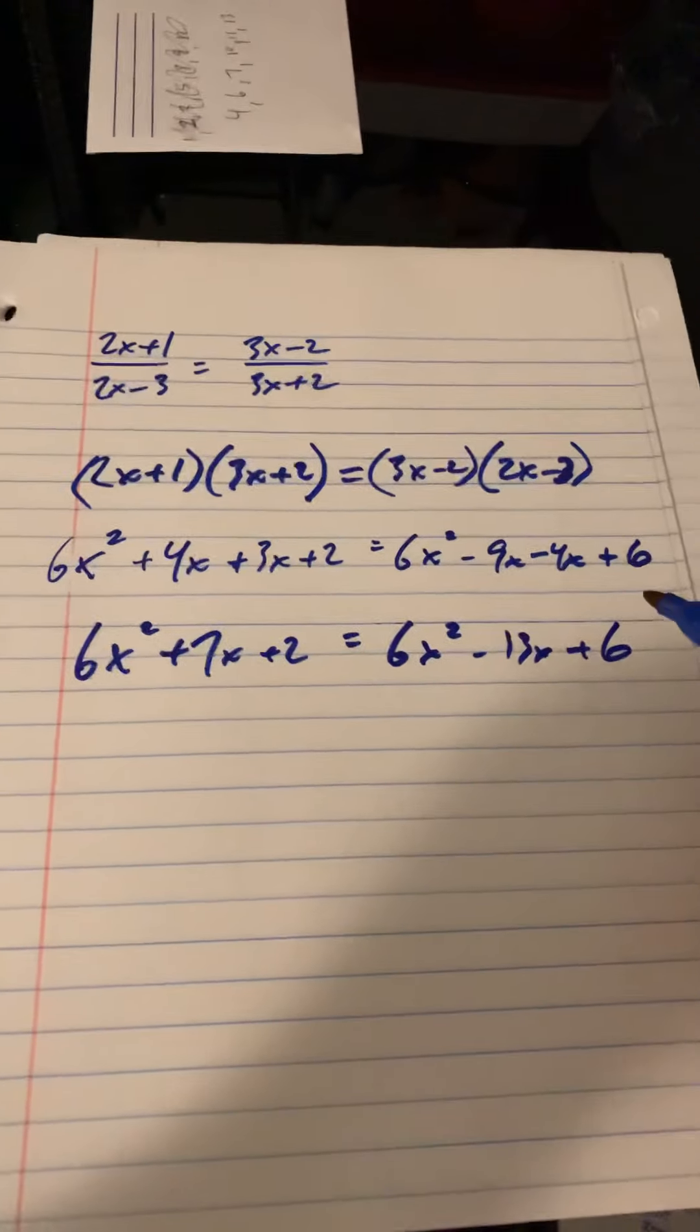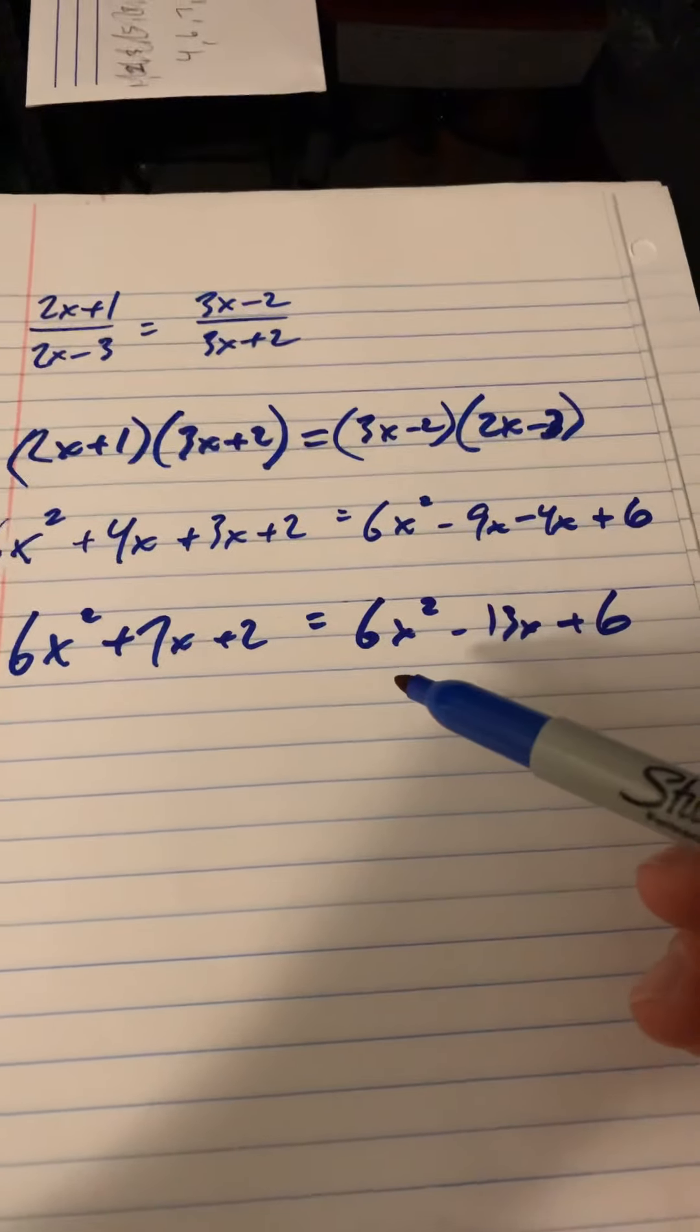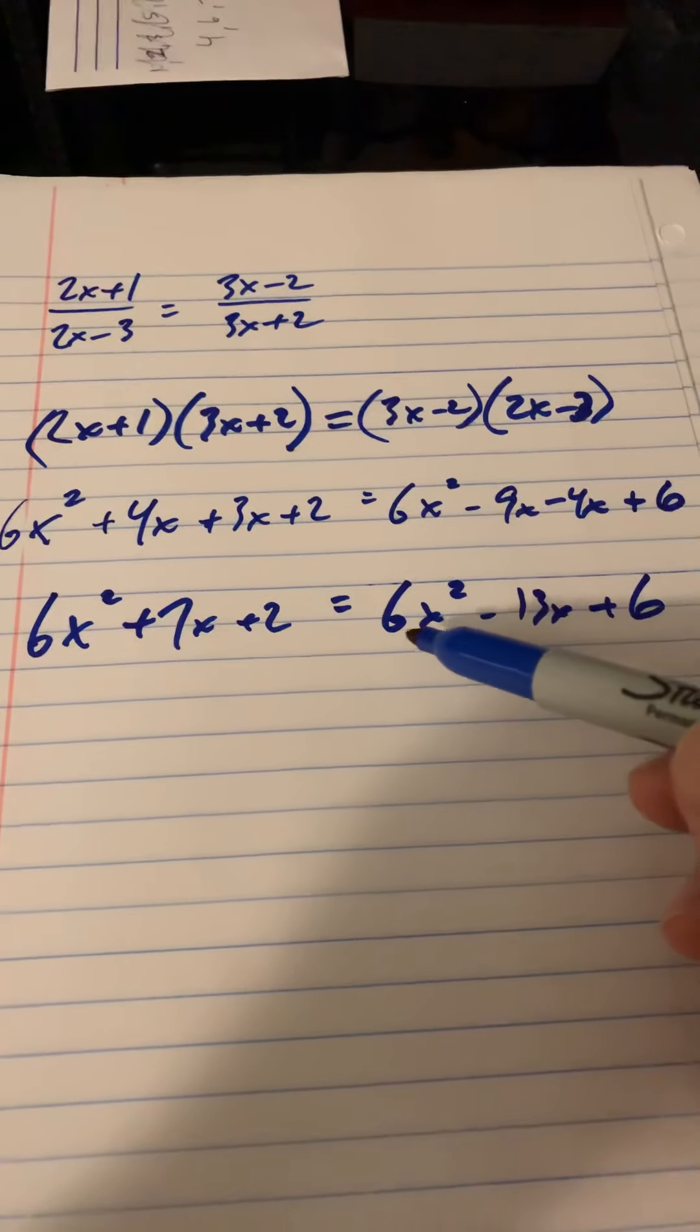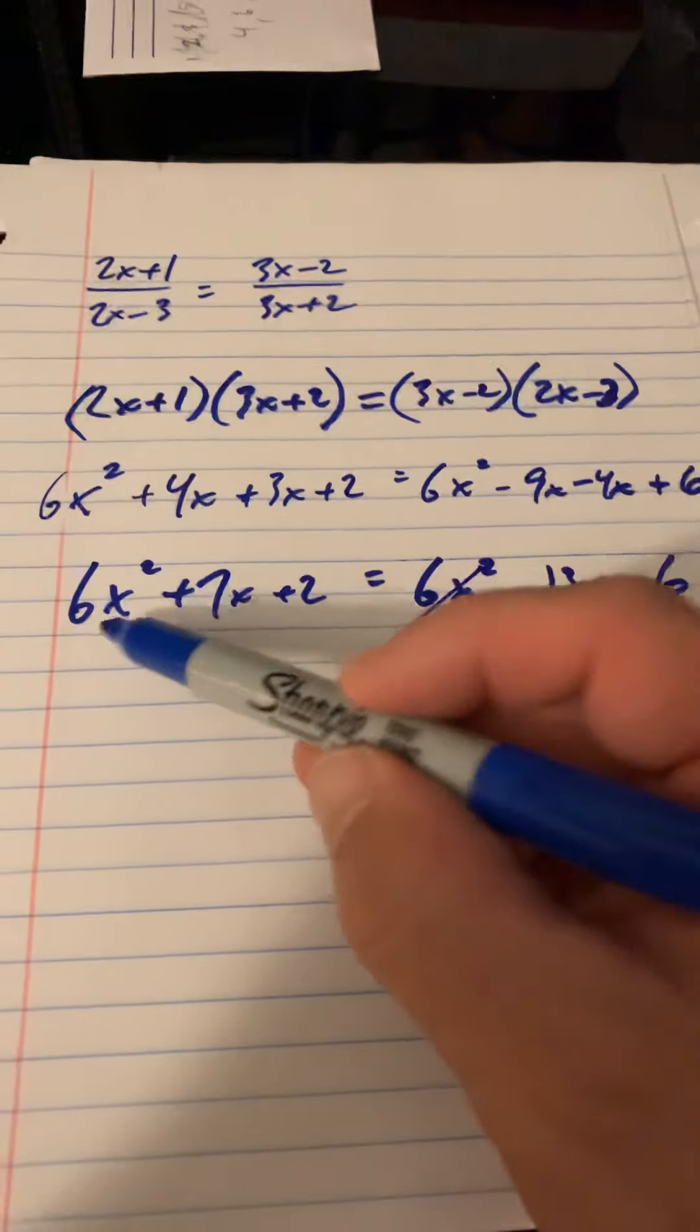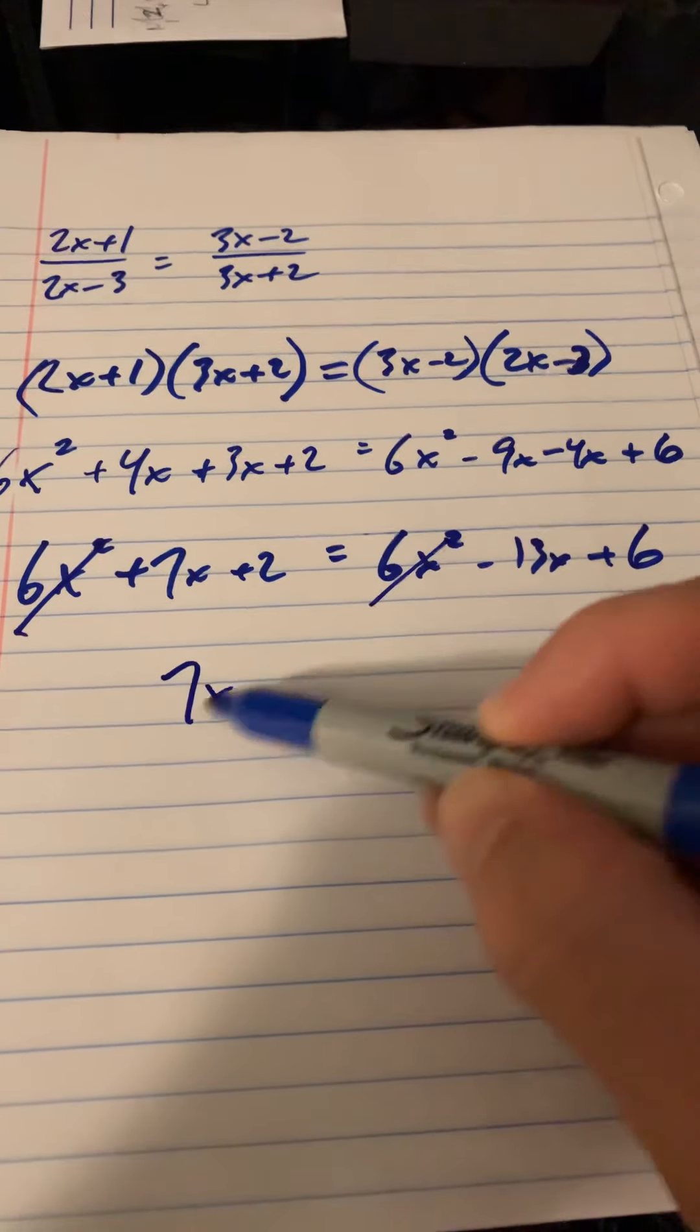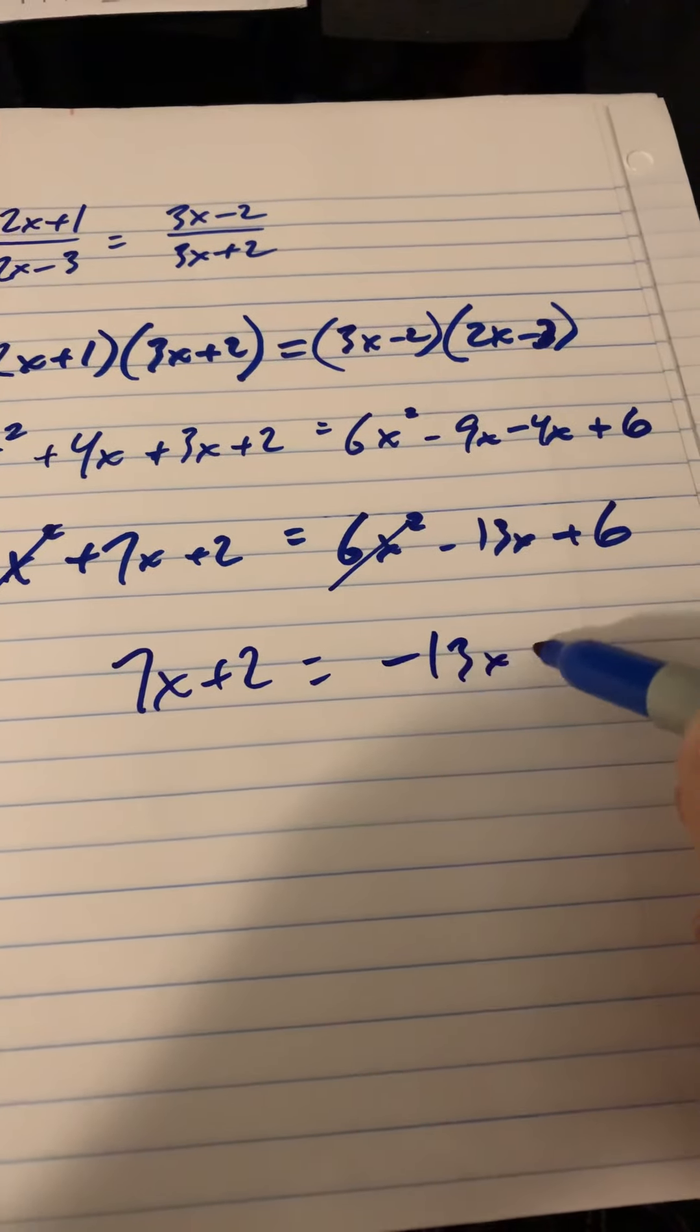Okay, now we're going to solve for x here. If I were to subtract 6x squared from both sides, then these would actually both just cancel. So it leaves me with 7x plus 2 equals negative 13x plus 6.